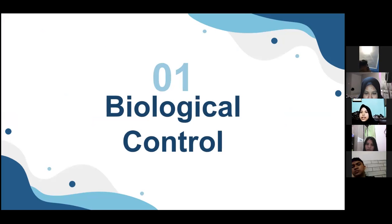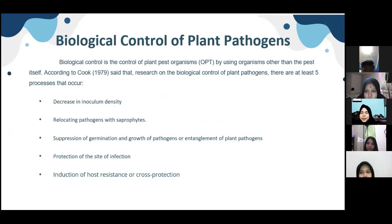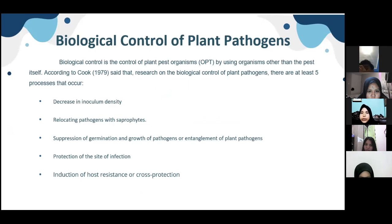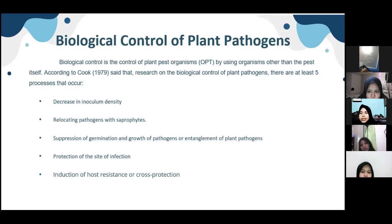First is biological control. Biological control is the control of plant pest organisms or OPT by using organisms other than the pest itself. According to Cook (1979), there are at least five processes that occur: first, decrease in inoculum density; second, relocating pathogens with separate pipes; third, suppression of germination and growth of pathogens or intense elements of plant pathogens; fourth, protection of the site of infection; and fifth, induction of host resistance or cross protection.